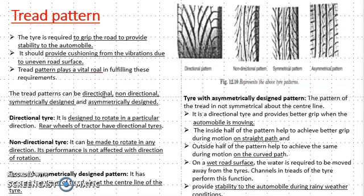Now we will see what is the directional tyre. Looking at figure one — directional pattern — it is designed to rotate in a particular direction. The wheel moves in a particular direction and that direction is designated by this directional tread pattern. If the direction is not fixed or the vehicle is not moving in a particular direction, it will not work properly and will affect the performance of the vehicle.